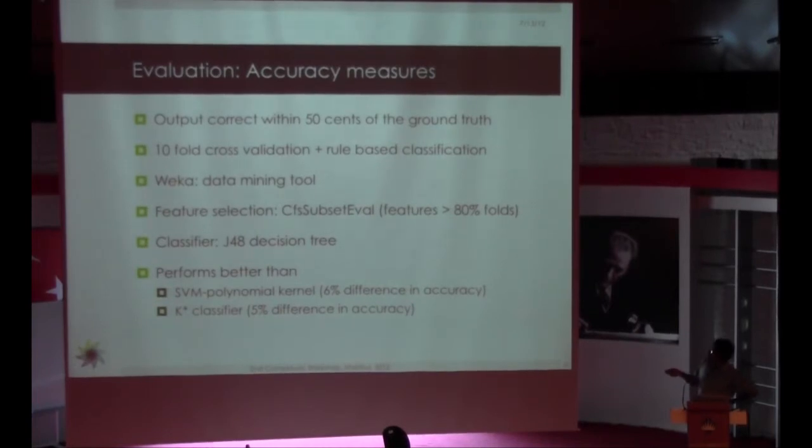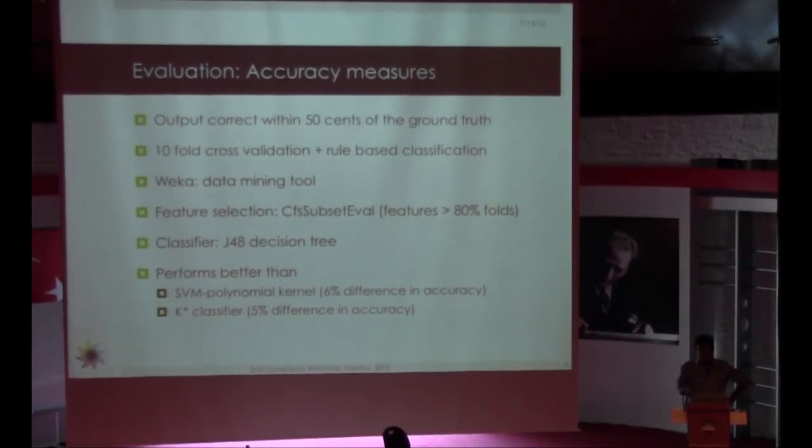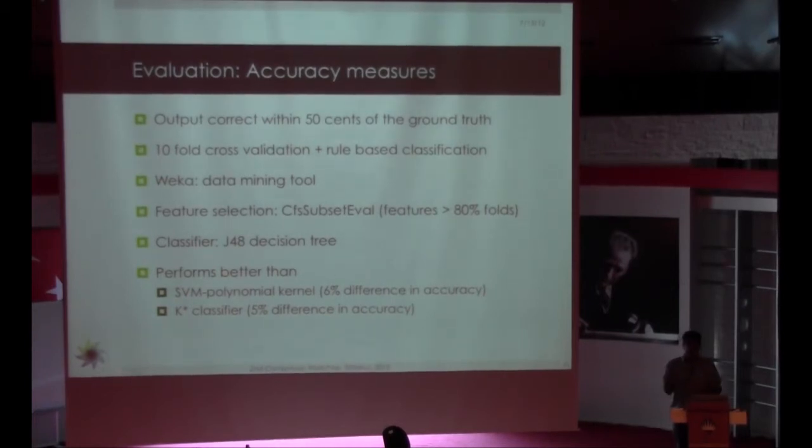Regarding the accuracy measures, we consider the output as correct if it is within 50 cents of the ground truth. We did both tenfold and rule-based classification. We used WEKA for machine learning part. For reducing the features, for the feature selection we used WEKA again. We used features which are reported, which are used in 80% of the folds, used J48 decision trees. We have tried a couple of other classifiers, but because of the type of the data, J48 was giving far better results.